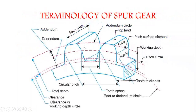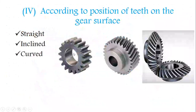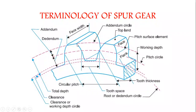The portion from the pitch circle up to the addendum circle is called the face of the gear. The portion below the pitch circle is called the flank. The top land, face, and flank are the main surface regions of a gear tooth.